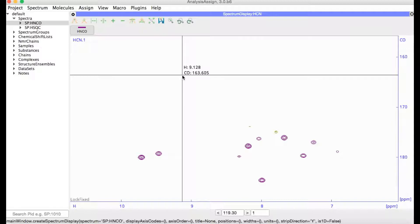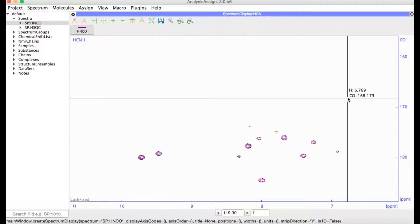I get a spectrum display showing my 3D spectrum with protons on the x-axis, carbon on the y-axis, and nitrogen along the z-axis.